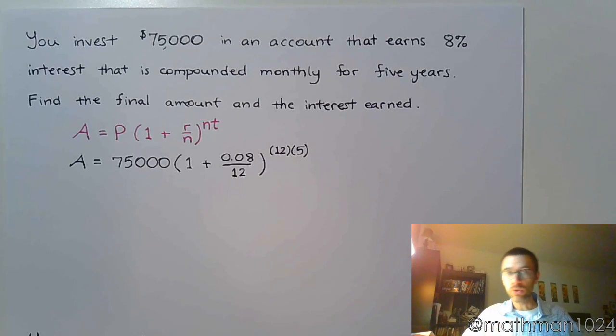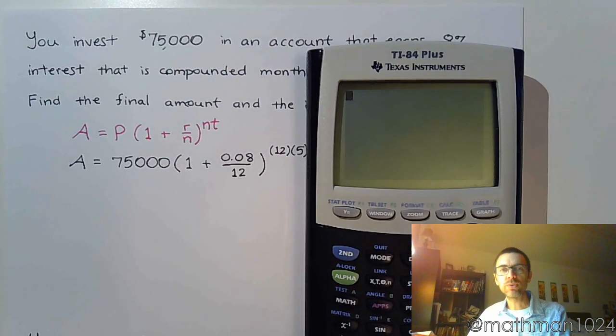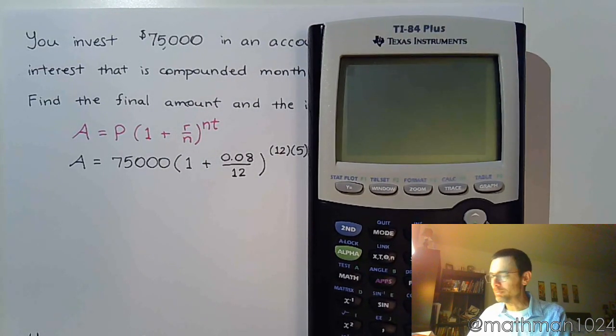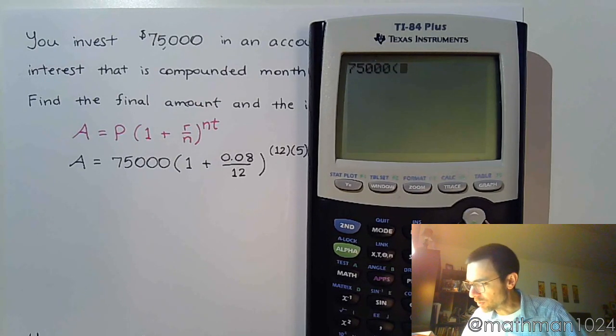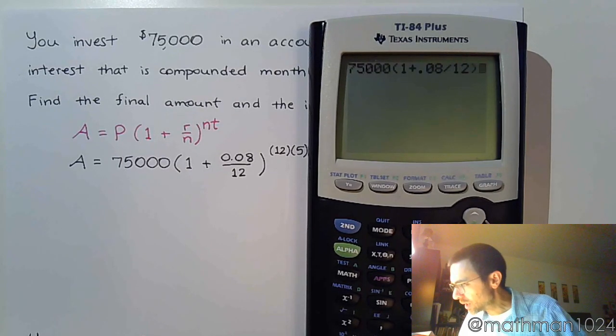Now, we just have to go to the calculator. Either a graphing or a scientific calculator will work. You just have to make sure that you type things into your calculator correctly. So, I have 75,000, make sure you type the correct number of zeros. Parentheses, 1 plus 0.08 divided by 12, close the parentheses.